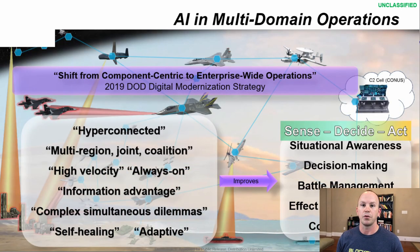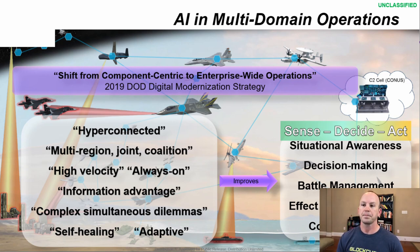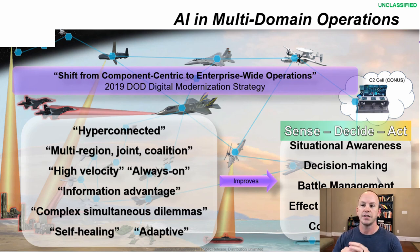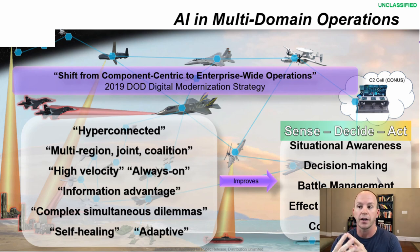How and why do we apply AI in multi-domain operations? Because we need to shift from an Army does this, Navy does this, Air Force does this, to a holistic enterprise-wide solution of putting all of our forces and effects to bear. We need it to be hyper-connective — that network needs to always be on and always working. Multi-region, joint, coalition, high velocity. You can think of this in basically three different buckets: your sensing, your decision, and your action — see what's happening in the environment, make a decision, and act kinetically or non-kinetically.